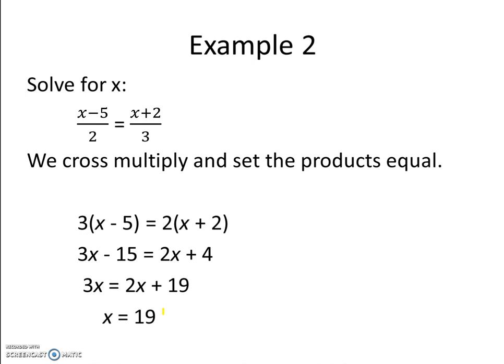For example 2, again we're solving for x. We cross multiply and we have 3 times the quantity x minus 5 equals 2 times the quantity x plus 2.